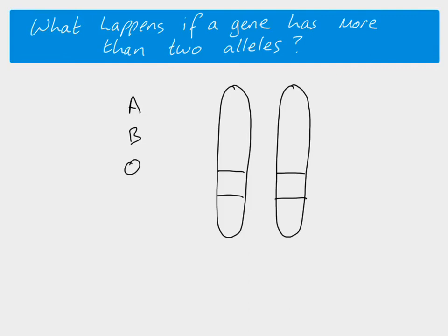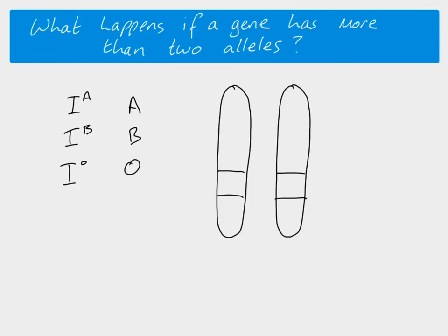Instead, what we do is write it like this. We have a letter which represents the gene, and for blood group the letter chosen is I. Then the A comes up as a superscript, giving us I^A. Allele B would be written I^B and allele O would be written I^O. By doing this, we're saying they all share the I — meaning they're all the same gene, the gene for blood group — but we have three different alleles.